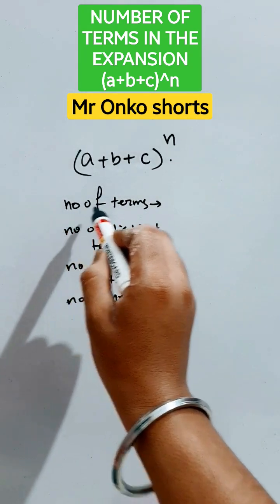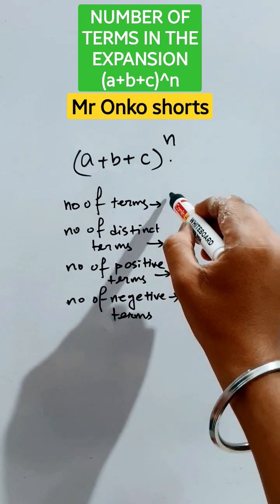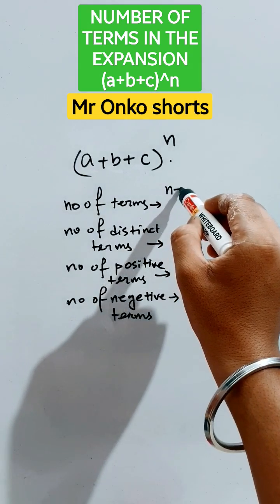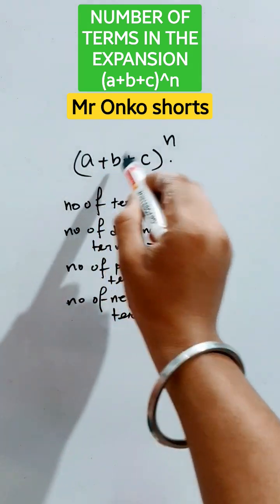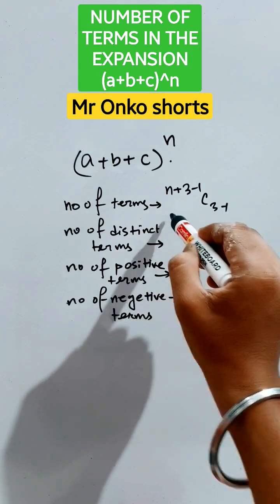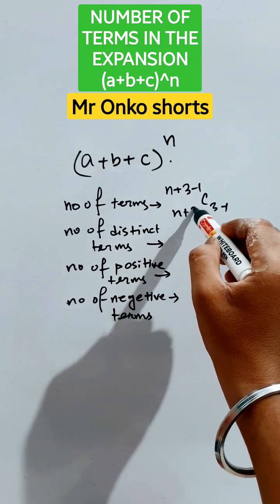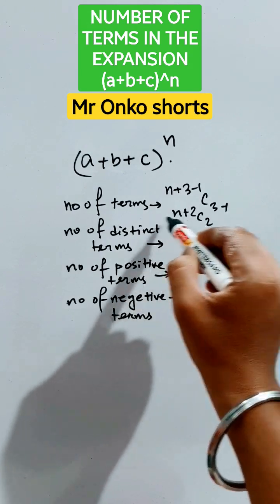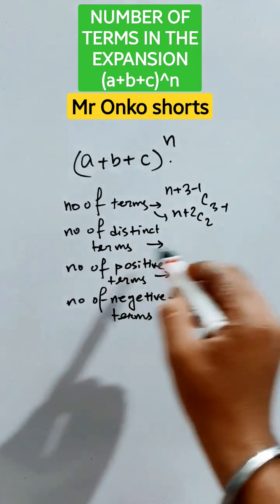Now, the number of terms — that is n+1, 2, 3 — that is (3-1) C (3-1), that is ⁿ⁺²C₂. This is the answer.